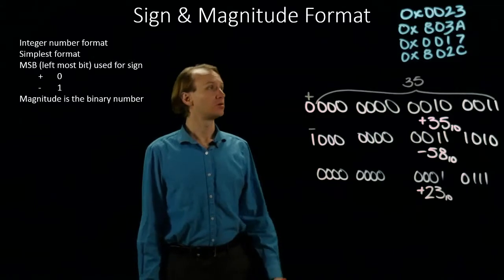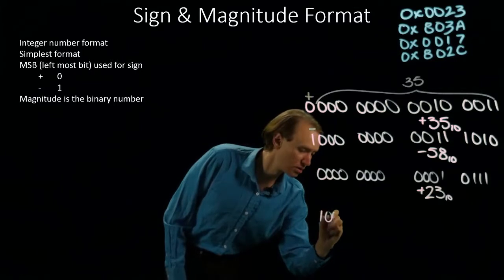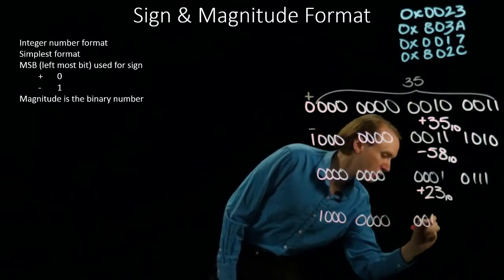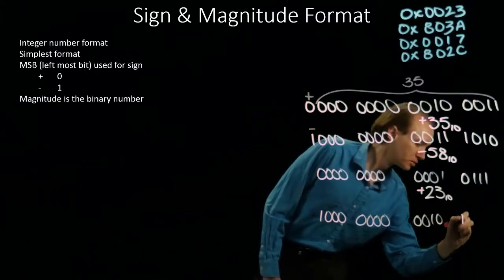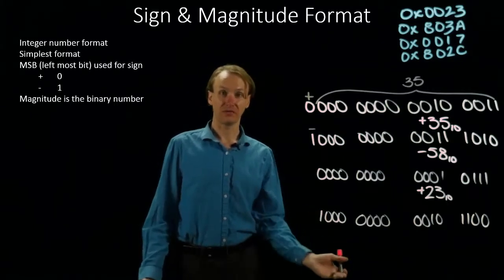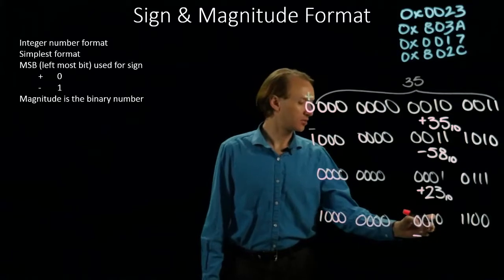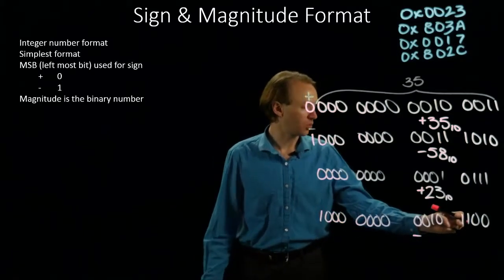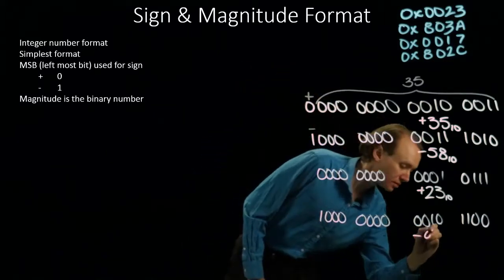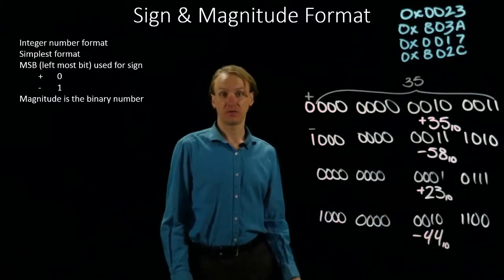Our last example is 802c. The leading 1 means that we have a negative number. And then I have 32 plus 8 gives me 40, plus 4 gives me 44. So this number is negative 44 in decimal.